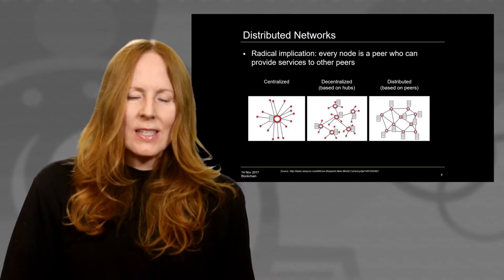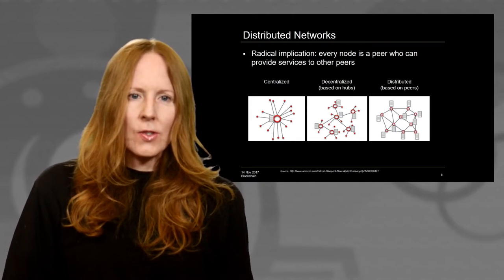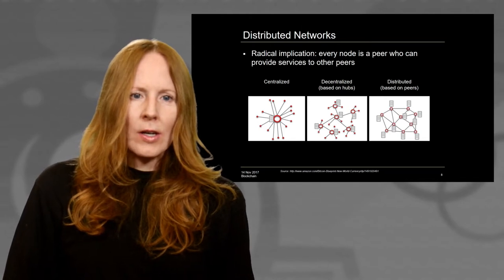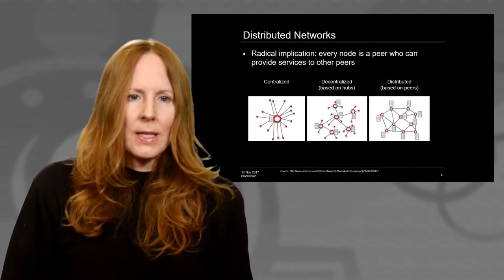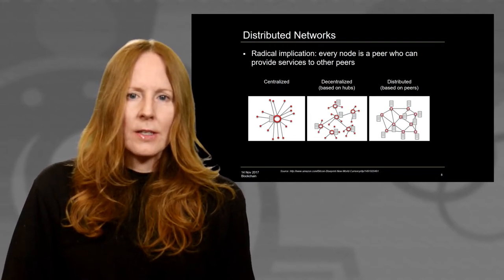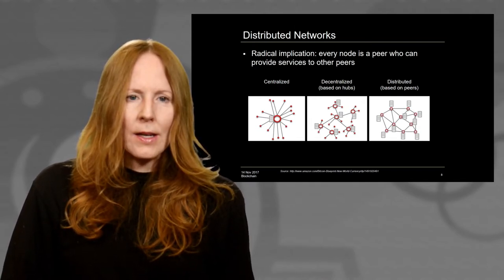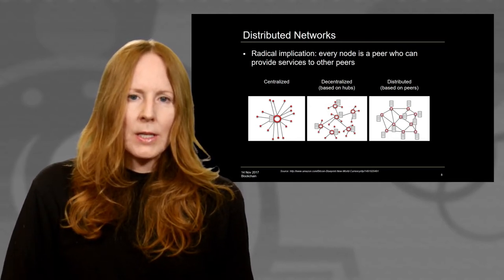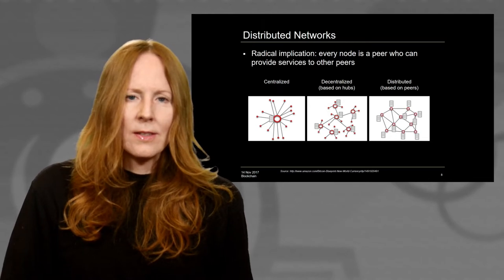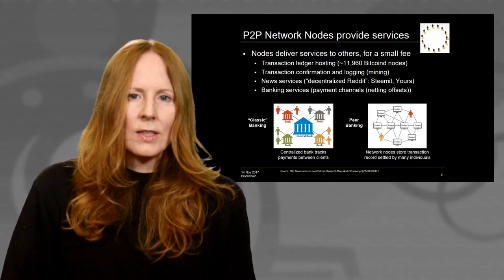Distributed networks represent the idea that we've had three different kinds of network architectures: those that are centralized and hierarchical, those that are decentralized based on hubs and spokes, and those that are distributed, like the Bitcoin blockchain — truly flat peer nodes, with no one node having any different status than any other. The radical notion of peer nodes is that each node can be a peer who provides services to others, and that's exactly what happens currently.